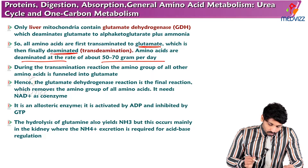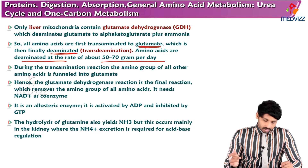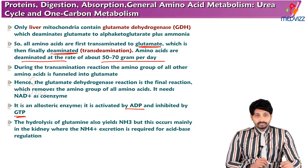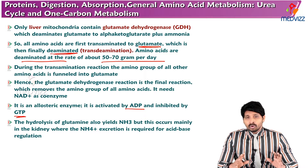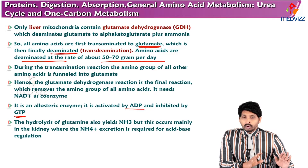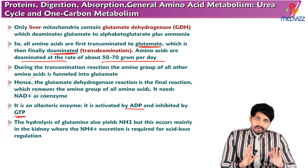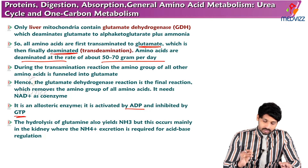The glutamate dehydrogenase reaction is the final reaction which removes the amino group of all amino acids. It requires NAD as coenzyme. As an allosteric enzyme, it is activated by ADP and inhibited by GTP. The hydrolysis of glutamine also yields ammonia, but this occurs mainly in the kidney, where the produced ammonia is converted to NH4+ ammonium ions, which are important in maintaining acid-base balance.